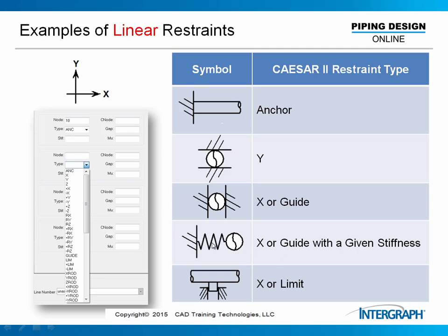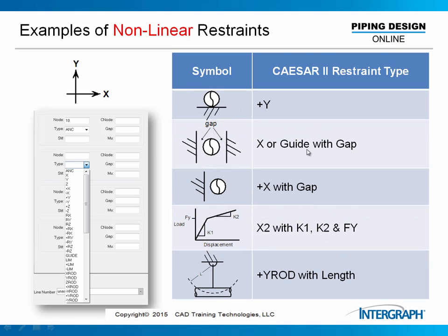Here is a spring support with a given stiffness. I can pull this left and right and it will load up the pipe because of that motion times the spring stiffness. The last one shown here is a limit stop, in the same direction as the pipe run. So we have many types of restraints in the program — some of them are linear and some of them are nonlinear.